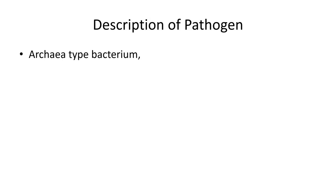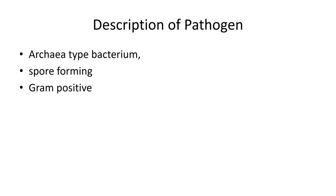Description of the pathogen: it has been determined to be an archaea type bacterium. The archaea type bacterium is a spore-forming one that has been around for millions and millions of years — some of these salt formations go back a hundred million years or more. These bacteria are found in the salt and come out and get into the pretzels. It is a gram positive type bacterium, meaning that when stained with a gram staining procedure you get a gram positive reaction. It is an ancient organism found in salt deposits, so when cheap salt is used in manufacturing, all of a sudden we get pretzel detwist disease.